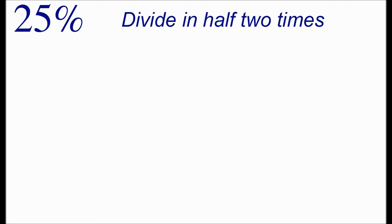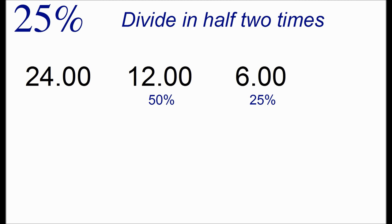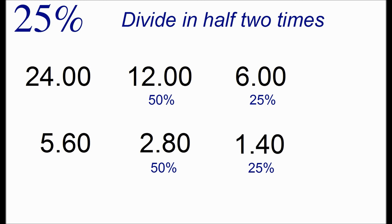We'll build on this to calculate 25% which is we're going to divide the number in half two times. So when we start out with 24, we first divide it in half to get 12 and then we divide it in half once more to get 6 and that'll be 25%. Similarly for 5.6, dividing in half one time gives us 2.8 and we can easily divide that number one time more to get 1.4 as 25%.